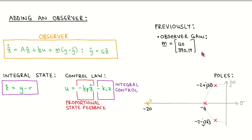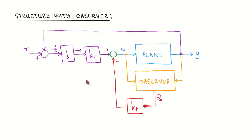Let's now look at a diagram of the compensator with observer before simulating the system. We have added an observer shown in orange that takes the plant input and plant output and estimates the plant states. These estimated states x-hat are now fed back through the proportional state feedback gain. The rest of the setup is unchanged.